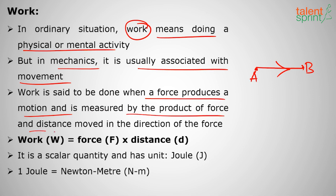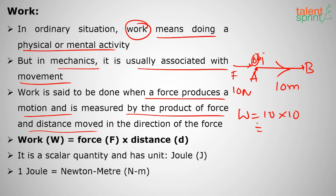Work is measured by the product of force and distance. For example, applying a force of 10 newtons over a distance of 10 meters gives 10 × 10 = 100 newton-meters, which equals 100 joules. One newton-meter equals one joule. The unit of work done is joules, and it is a scalar quantity with no direction.